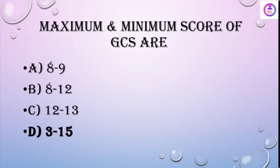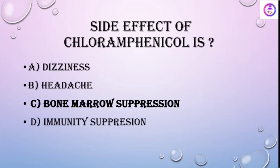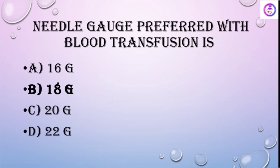The maximum and minimum score of GCS are 3 to 15. The side effect of chloramphenicol is bone marrow suppression. The needle gauge preferred with blood transfusion is 18 gauge.